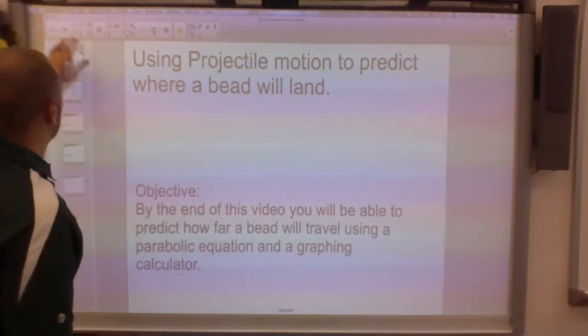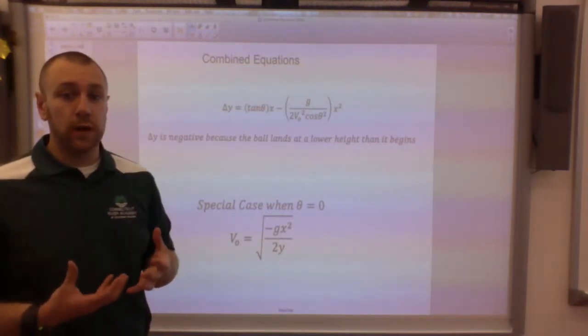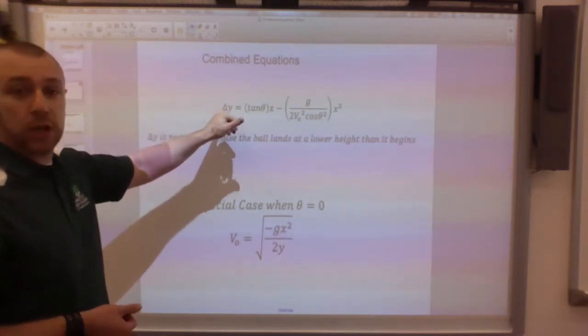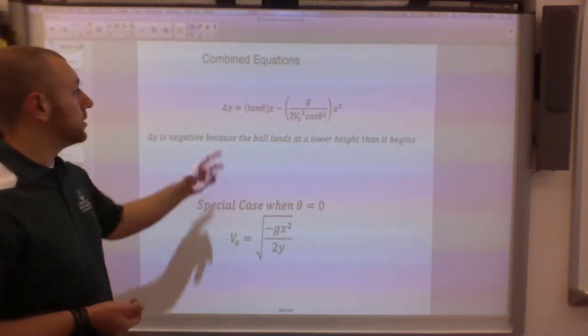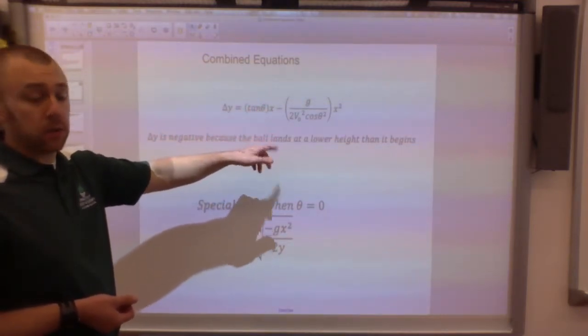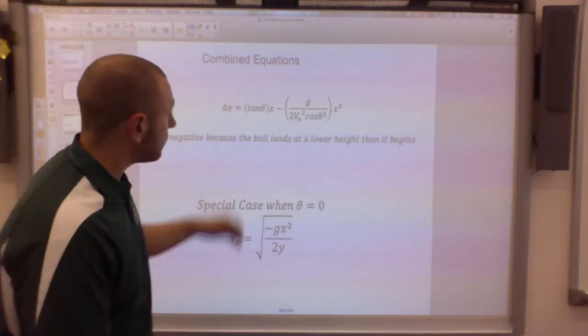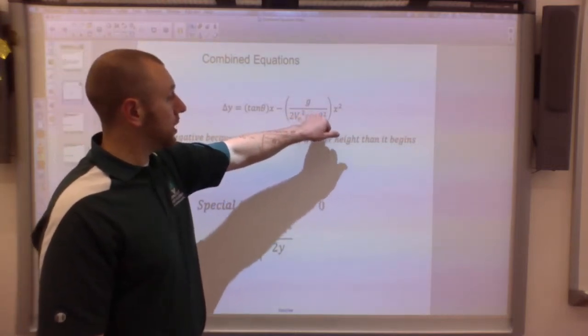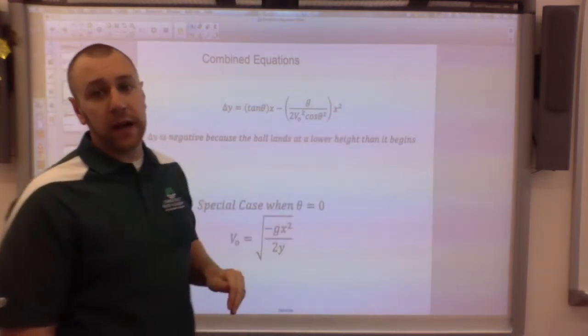I want to make sure that people have these two equations written down. The first equation is the change in distance vertically, or the y, equals the tangent of the angle times x, minus g (gravity) over two times our initial velocity squared times the cosine of that angle squared, all in front of the x squared.